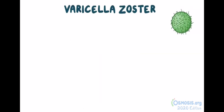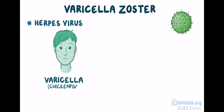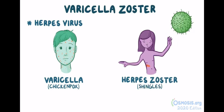Varicella zoster virus is one of the herpesviruses, and it causes two diseases: varicella, or chickenpox, and herpes zoster, also known as shingles. Zoster actually refers to a type of belt used by ancient Greek warriors because of the belt-like appearance of shingles.